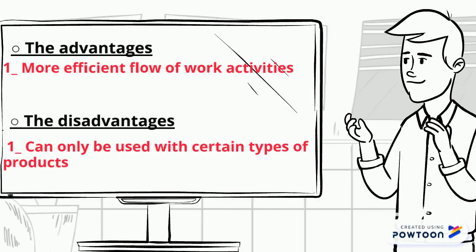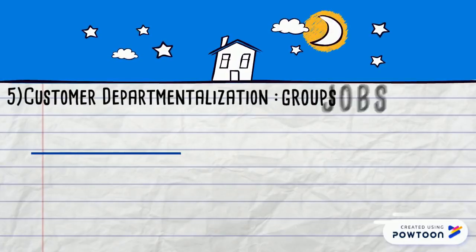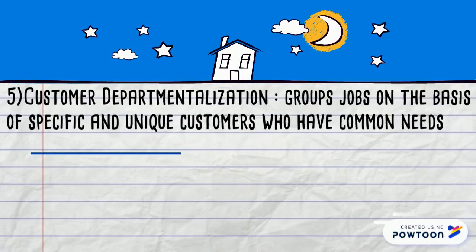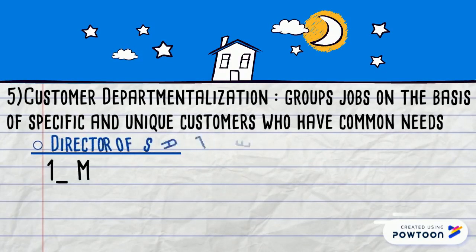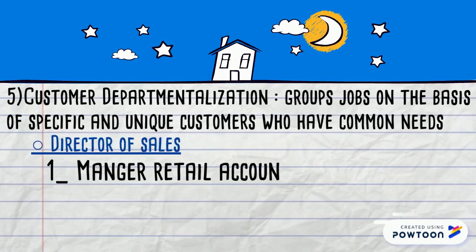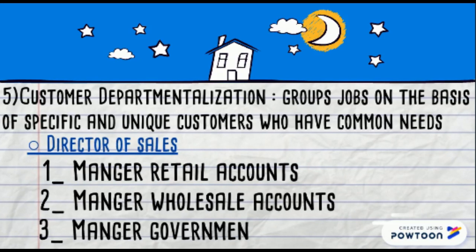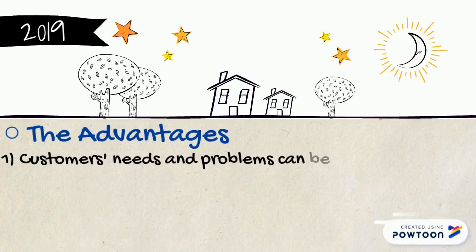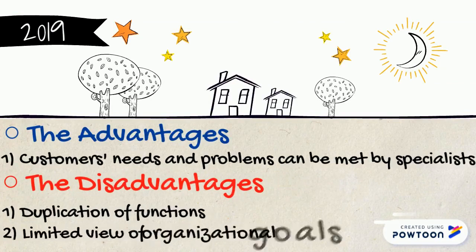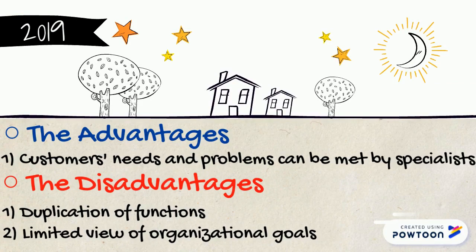Customer departmentalization groups jobs on the basis of specific and unique customers who have common needs. Director of Sales: 1. Major retail accounts, 2. Major wholesale accounts, 3. Major government accounts. The advantages: customers' needs and problems can be met by specialists. The disadvantages: duplication of functions, limited view of organizational goals.